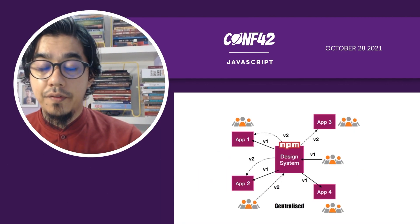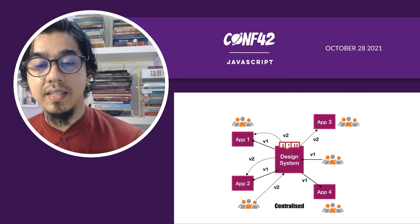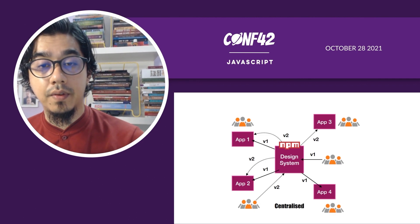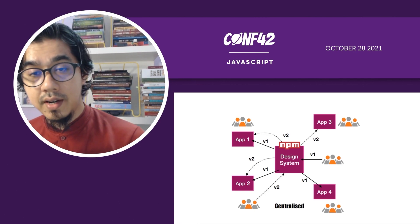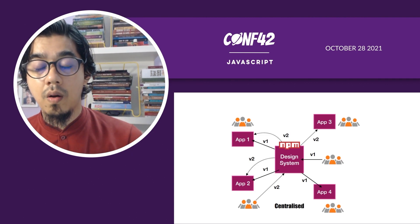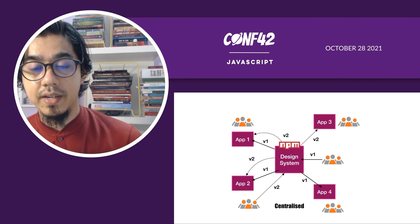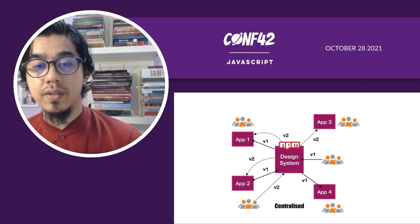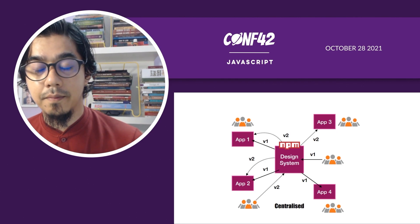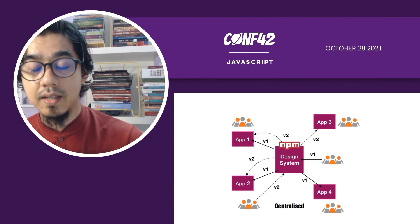Let's go through the first design system pattern called the centralized design system. We will discuss whether this centralized design system is suitable for microfrontends. A centralized design system has a central core component developer — the maintainer — who develops the components reused by applications across the organization. Teams use the design system components by toggling the version in the package.json.